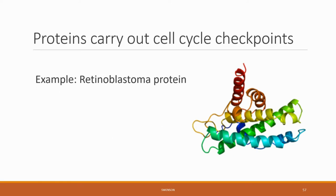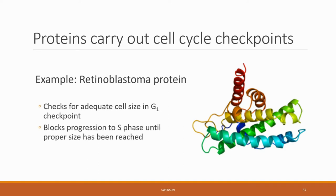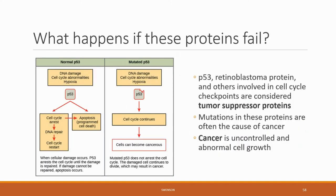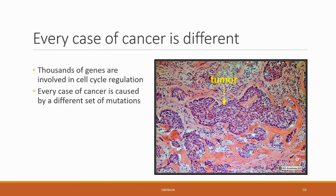Retinoblastoma protein is another which checks for adequate cell size in the G1 checkpoint and blocks progression to S phase until sufficient cell size has been reached. The answer is uncontrolled and abnormal cell growth. P53, retinoblastoma protein, and others involved in cell cycle checkpoints are considered tumor suppressor proteins because they help regulate cellular growth by arresting the cell cycle until a cell is restored to normal parameters. If this cannot occur, it will lead to apoptosis, defined as programmed cell death. A mutated p53 gene may not be able to have this protective effect and can therefore let cancer take hold within an organism. Mutated p53 genes have been identified in more than 50% of all human tumor cells.